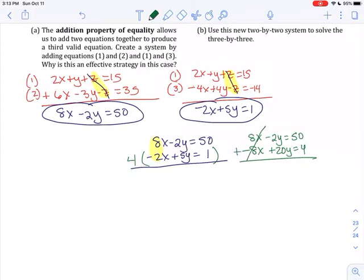Because remember, I'm trying to get this down to one variable. When I do that, the x's cancel out. I'm adding these two equations together. -2y + 20y is 18y, 50 + 4 is 54. Divide by 18. Y equals 3.